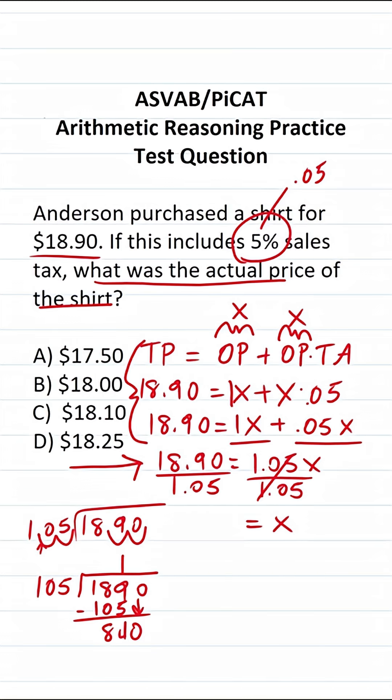How many times does 105 go into 840 without going over? You should be able to see this mentally. A hundred times eight would be 800. Five times eight would be 40. So we know this is going to be eight. 105 times eight is going to be 840 with no remainder. So X is 18. X refers to the original price of the shirt, not including sales tax. And we can see that is going to be $18.